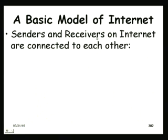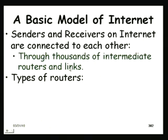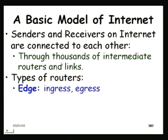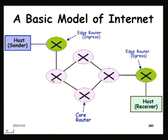Let us understand the basic model of the internet. The sender and receiver are connected through various links and routers. There are three types of routers: edge routers, which handle requests from senders and receivers — called ingress or egress depending on their role — and core routers in between. Various physical media are used across different links, such as twisted pair, fiber optic, and wireless.